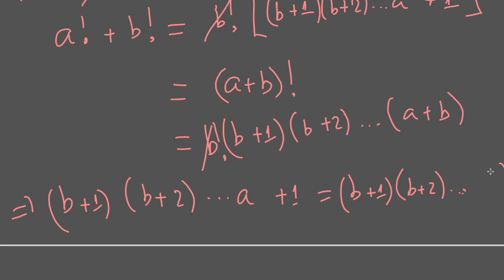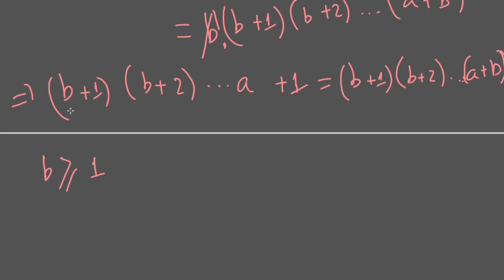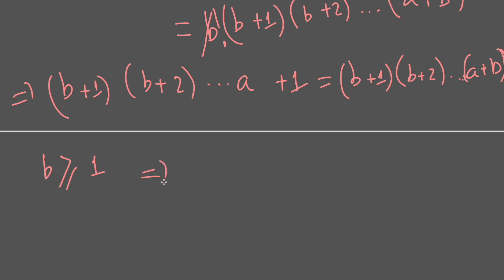Sorry, let me rewrite. So we can see that b is a positive integer, so b has to be greater than or equal to 1. Then b+1 will be greater than 1, or greater than or equal to 2.